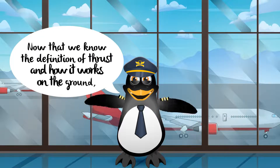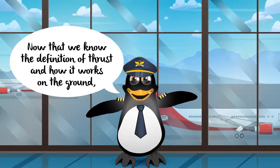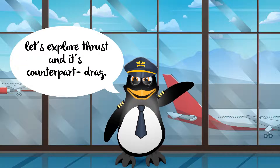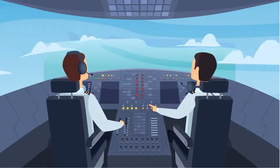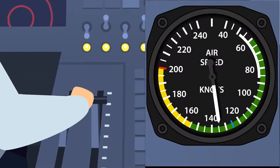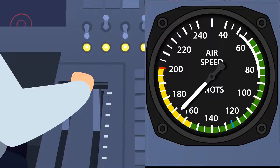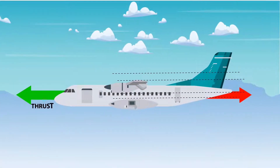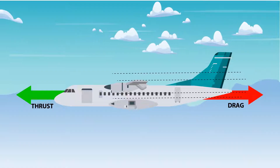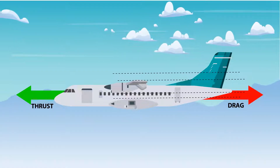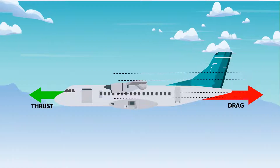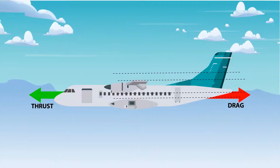Now that we know the definition of thrust and how it works on the ground, let's explore thrust and its counterpart, drag. During straight and level flight, if thrust is increased, the airspeed will increase. It will continue to accelerate until the force of thrust equals the force of drag. If thrust is decreased, the airspeed will slow until the force of thrust equals the force of drag.